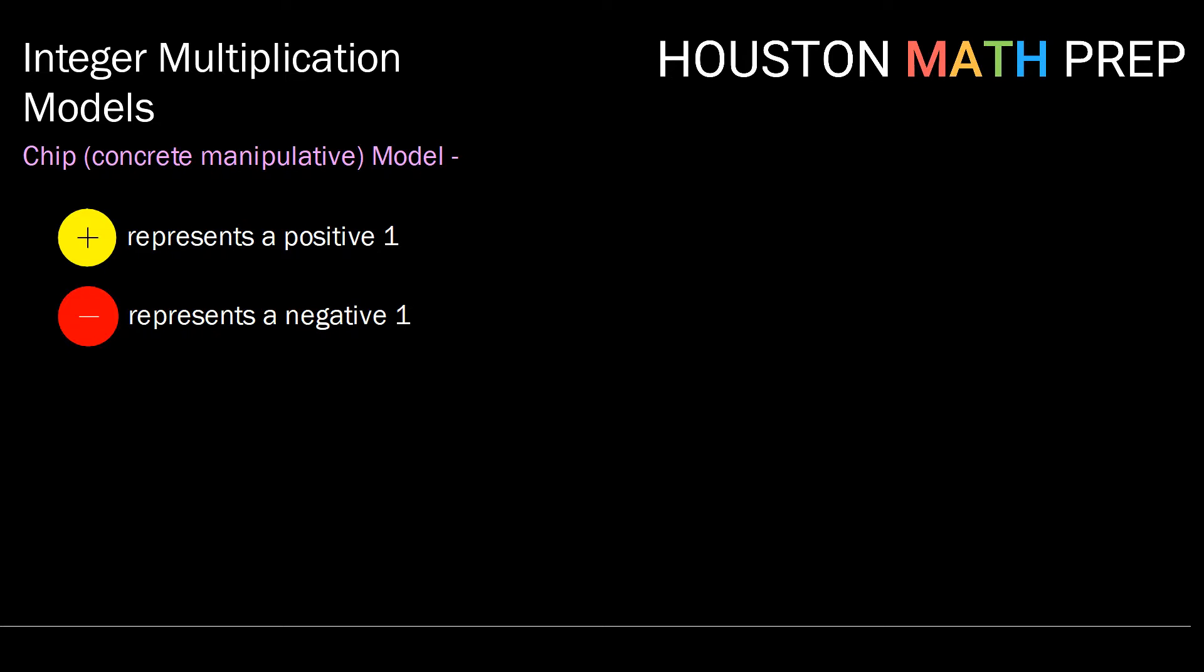If we're using these chip manipulatives, we have a positive chip, which represents positive 1, and a negative chip, which represents negative 1. We know that when we add a positive 1 and a negative 1, we get 0.